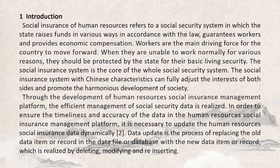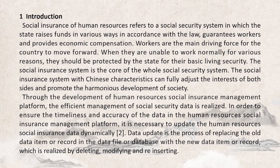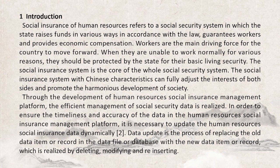Introduction. Social insurance of human resources refers to a social security system in which the state raises funds in various ways in accordance with the law, guaranteeing its workers and provides economic compensation. Workers are the main driving force for the country to move forward. When they are unable to work normally for various reasons, they should be protected by the state for their basic living security. The social insurance system is the core of the whole social security system. The social insurance system with Chinese characteristics can fully adjust the interests of both sides and promote the harmonious development of society. In recent years, computer technology and network technology are becoming more and more common, greatly liberating the productive forces.